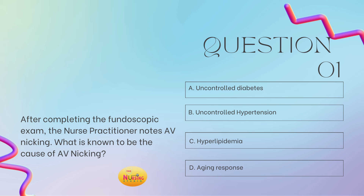I always recommend reading the stem of the question first so that it allows you to slow down and answer what is truly being asked. So here, the stem states: what is known to be the cause of AV nicking? Is it A, uncontrolled diabetes; B, uncontrolled hypertension; C, hyperlipidemia; or D, the aging response? This is truly a knowledge-based question. So B, uncontrolled hypertension, is the best answer.